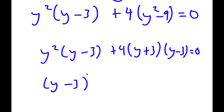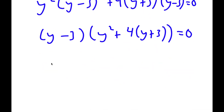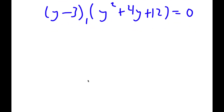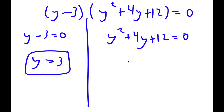If I factor out y minus 3, I get y minus 3 times y squared plus 4 times y plus 3, which is equal to 0. Simplifying, I get y minus 3 times y squared plus 4y plus 12 is equal to 0. This gives me two equations: y minus 3 is equal to 0, and y squared plus 4y plus 12 is equal to 0. For y minus 3 equals 0, y is obviously equal to 3. For y squared plus 4y plus 12 equals 0, the quadratic formula gives the square root of a negative number, so that equation has no real solution.